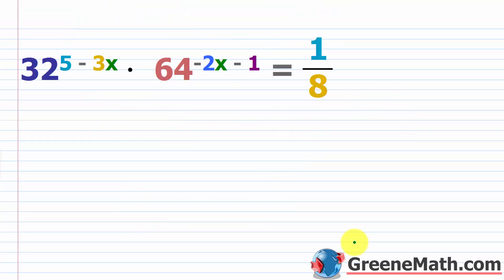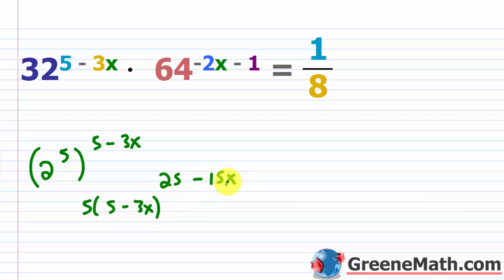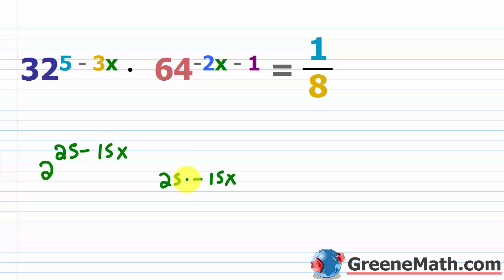Now we have one that's a bit more complicated. We have 32 raised to the power of five minus three x, times 64 raised to the power of negative two x minus one, equals one over eight. Looking at 32, 64, and eight, you should immediately think of a base of two: two cubed is eight, two to the sixth is 64, two to the fifth is 32. Starting with 32: rewrite as two to the fifth power raised to five minus three x. Using the power-to-power rule: five times five is 25, and five times negative three x is negative 15x. So the exponent becomes 25 minus 15x.